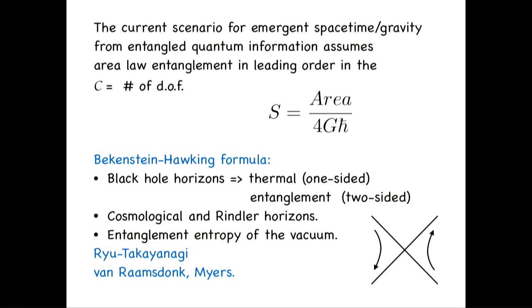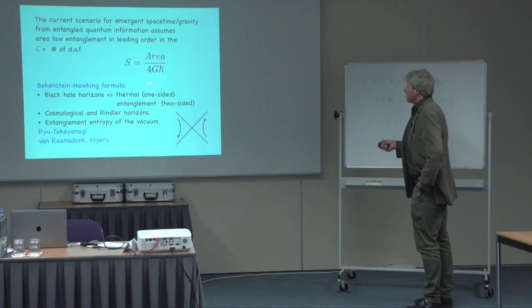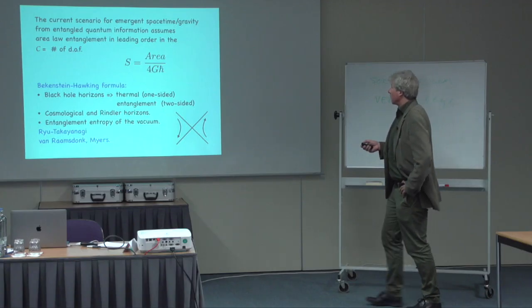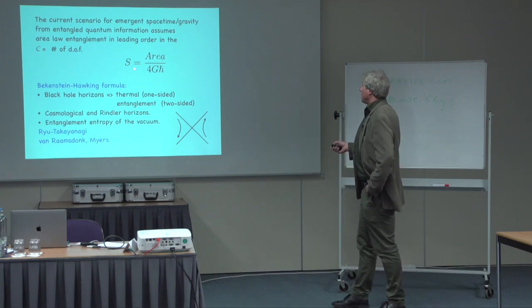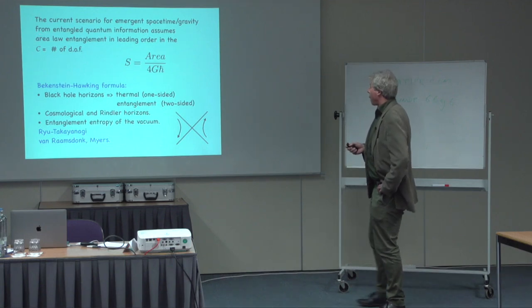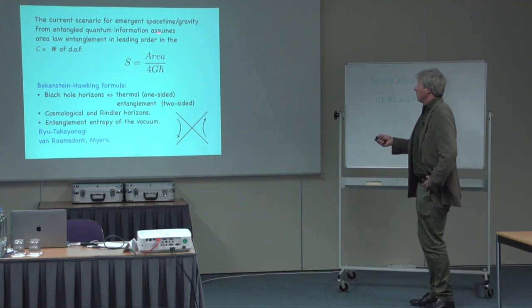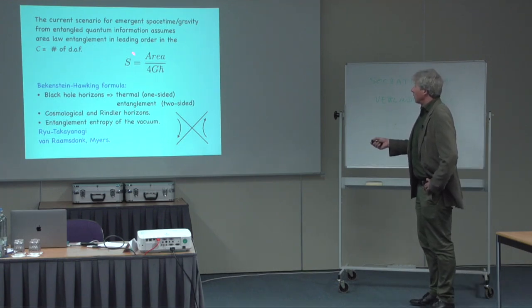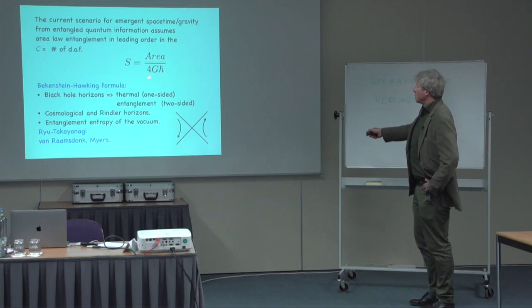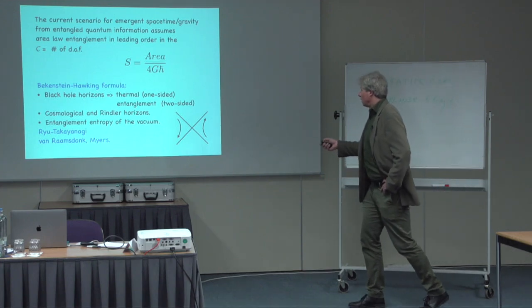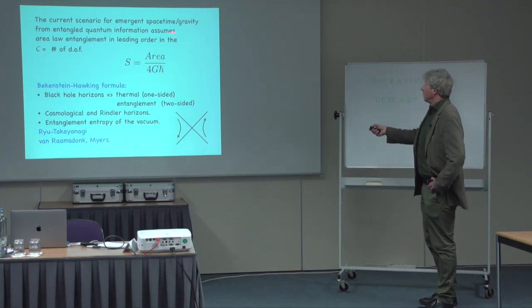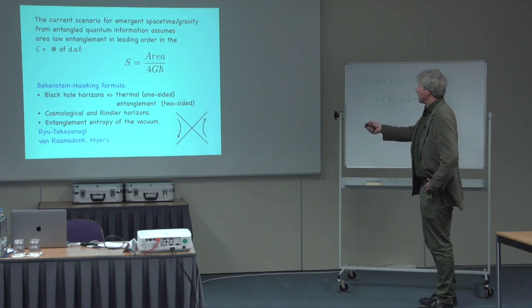There is a story about emergent gravity that takes this formula as the central starting point. If we assume the entanglement entropy equals area over 4G, there is a way of deriving gravity from it. We take this formula as given and can obtain emergent spacetime and gravity out of it.